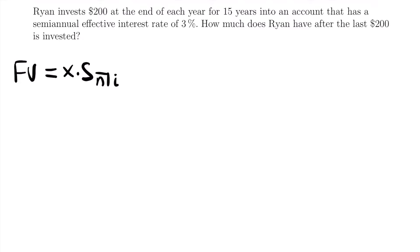X is going to be equal to $200 because Ryan is investing $200 at the end of each year for 15 years. Our number of periods is 15 years — that's how many payments we're going to be making. Since Ryan is making a payment of $200 at the end of each year and doing it for 15 years, N is equal to 15. He's going to have 15 payments to make.